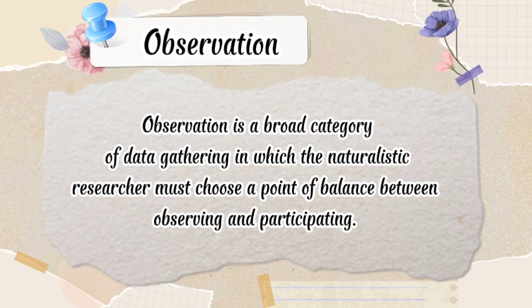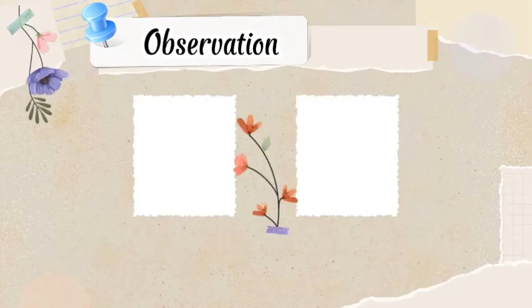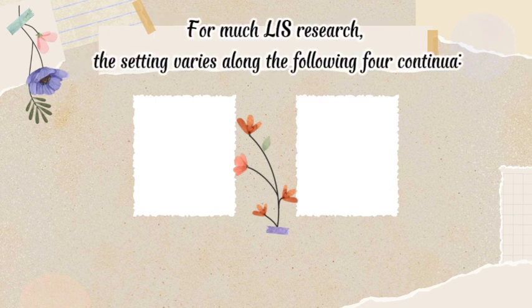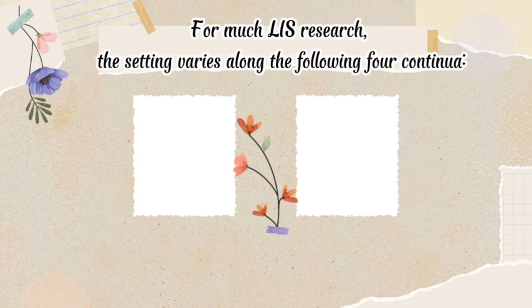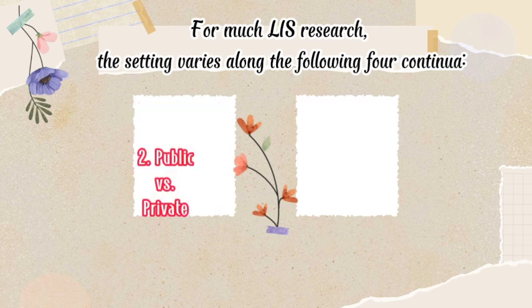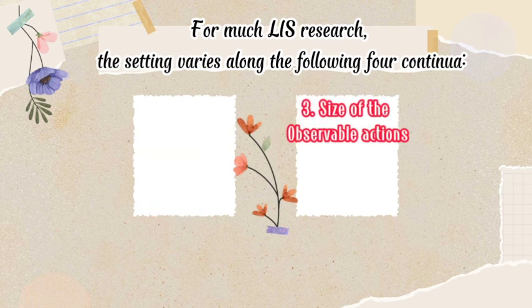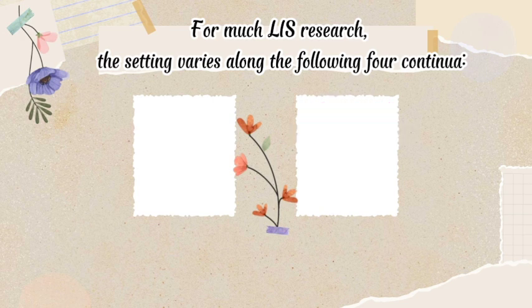The two criteria for determining the right number of interview participants are sufficiency and saturation. Observation is a broad category of data gathering in which the naturalistic researcher must choose a point of balance between observing and participating. The setting and purpose determine the observation structure and format. For much LIS research, the setting varies along four continua: number of participants, public vs. private, size of the observable actions, and staff vs. public.